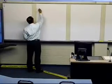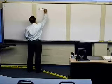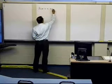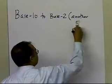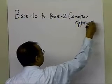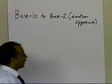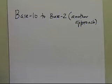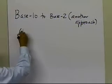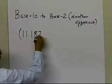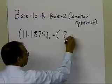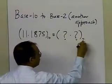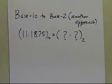In this segment, what we're going to do is convert a base 10 to base 2 number, but we're going to follow another approach which is a little bit more holistic and also self-explanatory, as opposed to the previous segment. We're going to take the same number, which is 11.1875 base 10, and convert it into a base 2 number.